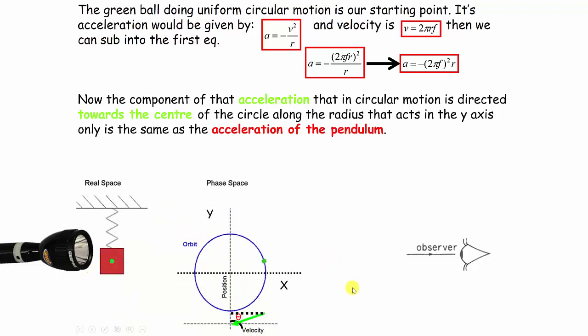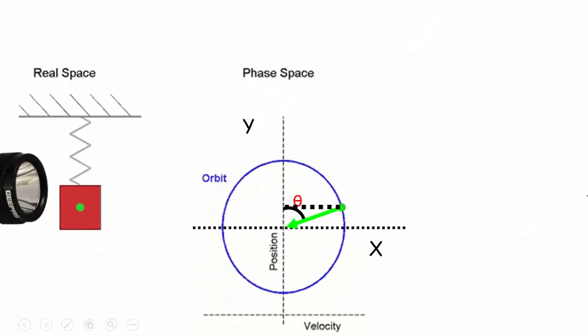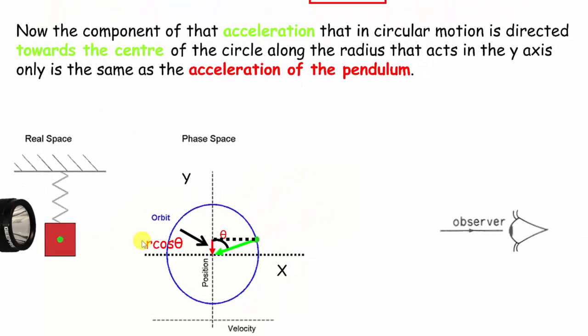So if I just freeze it and we look, the green arrow is its actual acceleration, which would be this. This component, because I could split the green arrow up into two components, a vertical and a horizontal, the vertical component would be the same as the red block's acceleration.